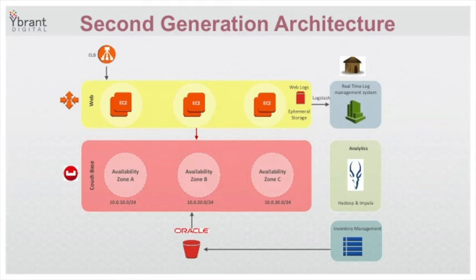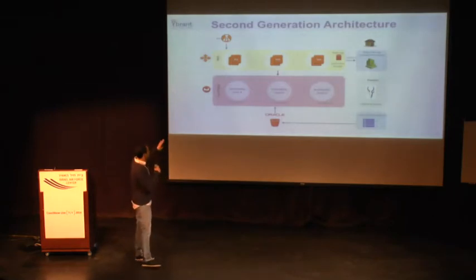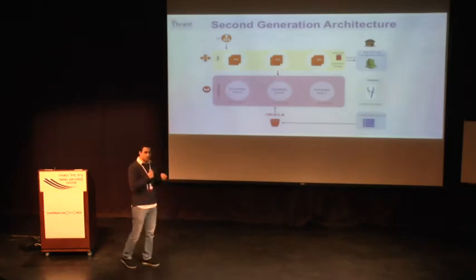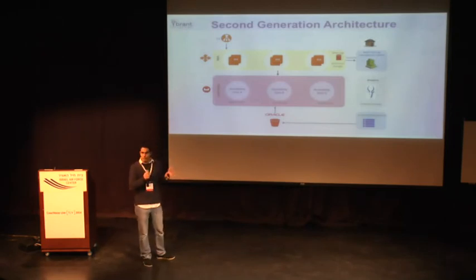Looking at the architecture: basically, we are using Couchbase for our inventory — placing all our inventory inside Couchbase. All data flows from Amazon Elastic Load Balancers across three different availability zones. We have auto-scaling groups in each availability zone, so we can scale out and shrink as load increases or decreases. The layer underneath the web layer — the online algorithm — is Couchbase, which is also spread among three availability zones, achieved with VPC segmentation.